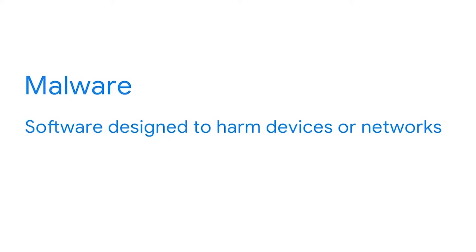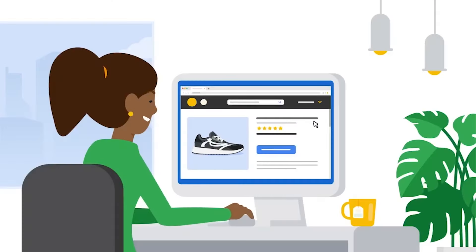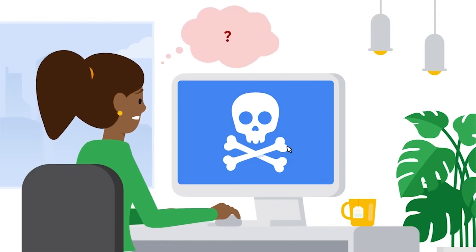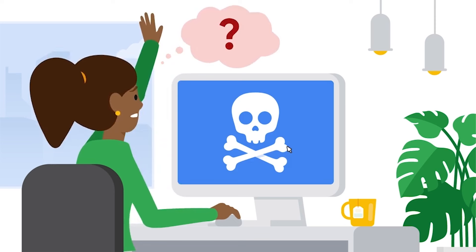Malware is software designed to harm devices or networks. Malware, which is short for malicious software, can be spread in many ways — for example, through an infected USB drive or commonly spread between computers online. Devices and systems connected to the Internet are especially vulnerable. When a device becomes infected, malware interferes with its normal operations, and attackers use it to take control of the infected system without the user's knowledge or permission.